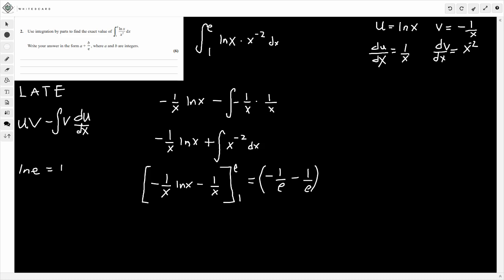Now we need to subtract the second bit. So this is with the 1 going in. Minus 1 over 1 times ln 1. Well, remember, ln 1 is just equal to 0. So that's just going to be 0 for this part. And then, minus 1 over 1, which is just going to be 1. So let's just rewrite that as minus 1.